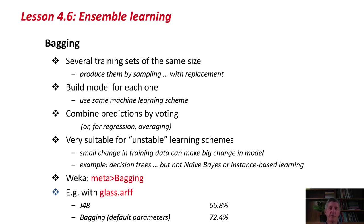In a regression situation, you would average the numerical result rather than voting. Bagging is very suitable for learning schemes that are called unstable — ones where a small change in the training data can make a big change in the model. Decision trees are a good example: a tiny change in training data can produce a completely different tree. Naive Bayes, by contrast, is a stable method.